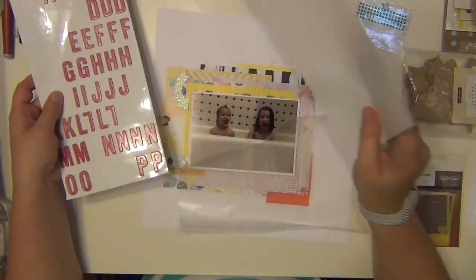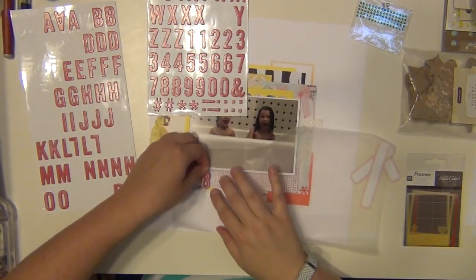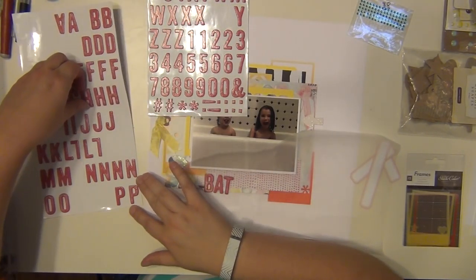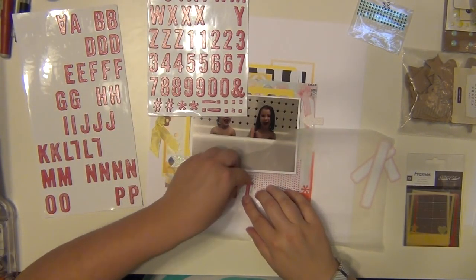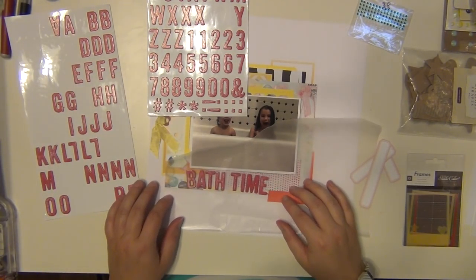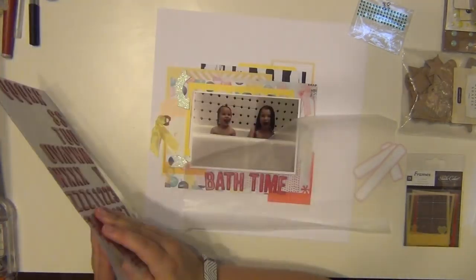Those were all I have left from that package as well, so that's the second package of stuff I used up, plus I used up the last die cut there. So I guess that's three things I used up here. I'm using these Print Shop stickers and I'm spelling out 'bath time,' and I'm going to put that along the bottom of my picture there.